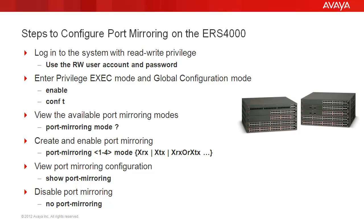Then we'll create and enable port mirroring using the command port mirroring, then specify the instance number, which can be from 1 through 4, where 1 is the default. Then mode followed by the format for one of the available modes, such as mirroring the packets received on port X, or packets transmitted on port X, or both received and transmitted by port X.